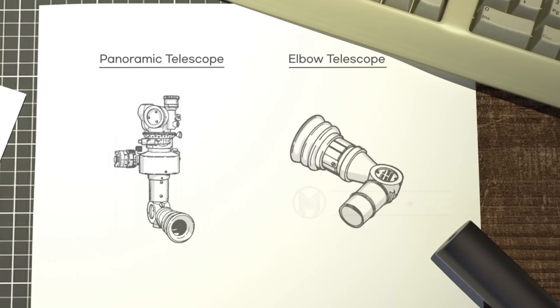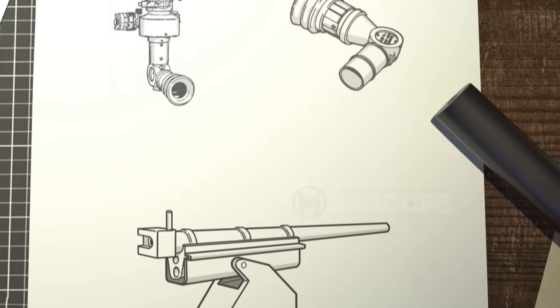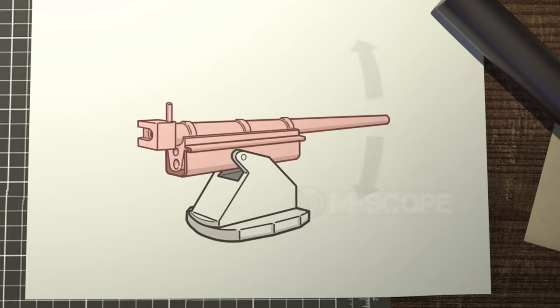For howitzer's aiming precision, one can use a panoramic telescope and an elbow telescope. To change the direction of the cannon, you need to move it up down left right. The elevating mechanism allows for the up-down movement, and the traversing mechanism enables left and right movement.